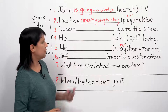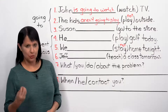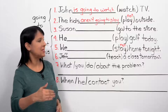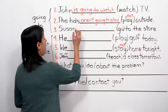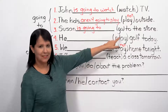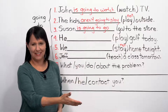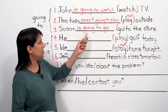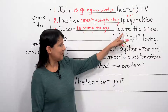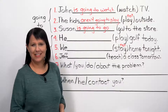Number three: 'Susan [blank] go to the store.' Pay attention - I want you to use 'going to' and the verb is 'go.' Just follow the same principle: 'Susan is going to go to the store.' Yes, we can say that. 'Susan is going to watch TV,' 'Susan is going to play outside,' 'Susan is going to go to the store.' Sometimes the verb itself is 'go,' but you still have to use 'going to' - that's fine.